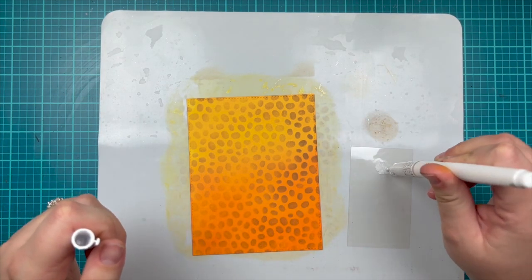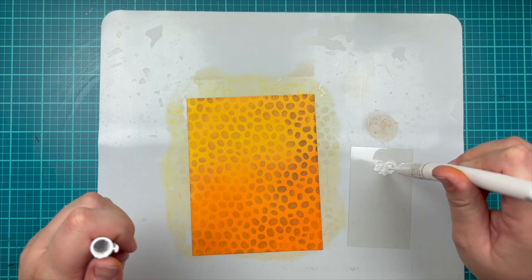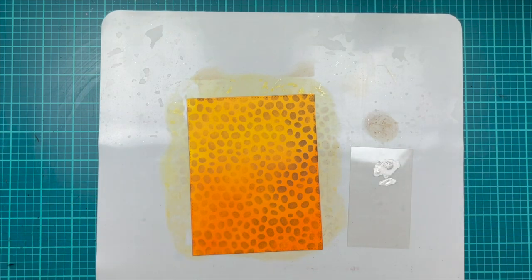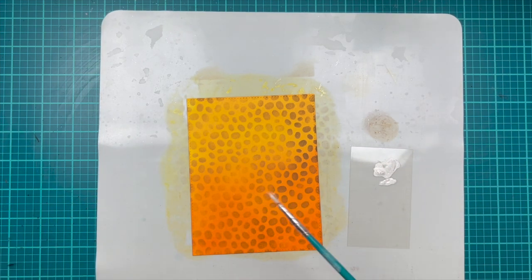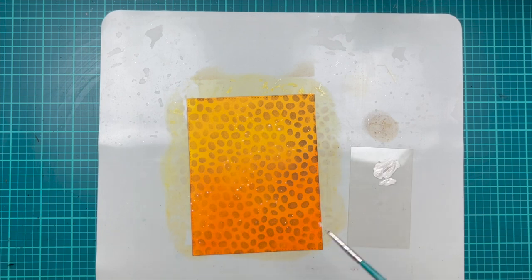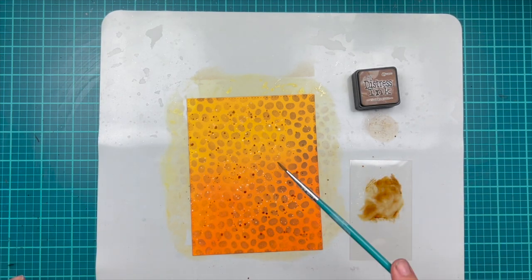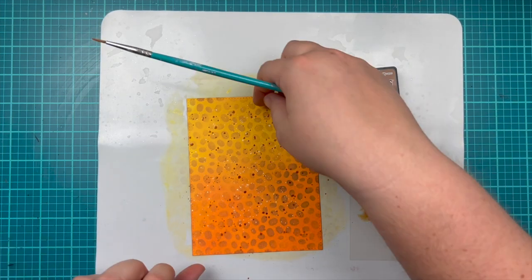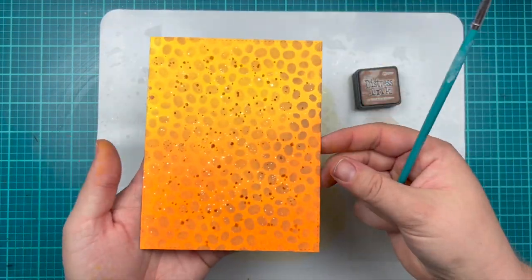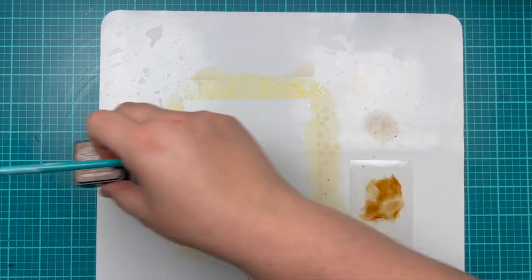Now I'm going to add a little bit of splatter. I have a white ink pen that I'm just putting onto a small piece of scrap acetate and I'm grabbing a fine brush to splatter that onto my background. Then I also did vintage photo distress ink, added some water and splattered that to my background as well.